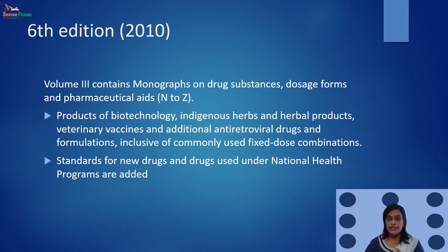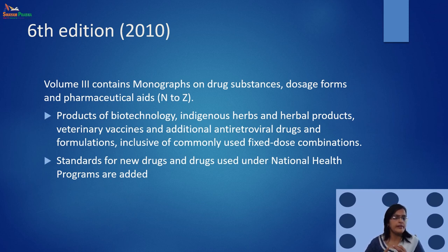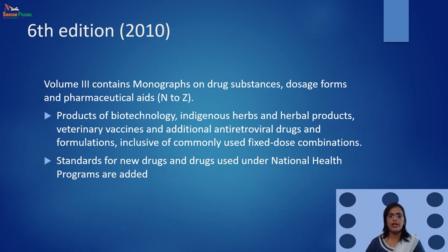In 2010, the scope of the pharmacopoeia was extended to include the products of biotechnology, indigenous herbs and herbal products, as well as veterinary vaccines, and additional antiretroviral drugs and formulations. This was introduced in the 6th edition of Indian pharmacopoeia.